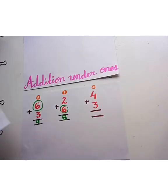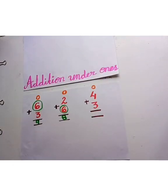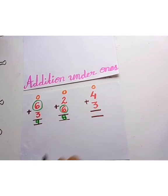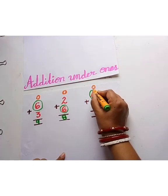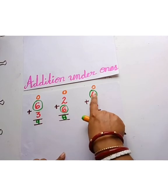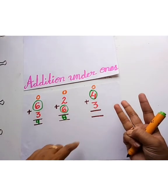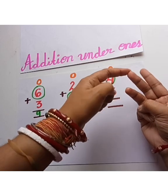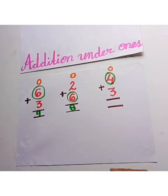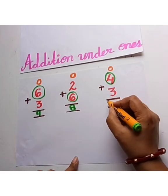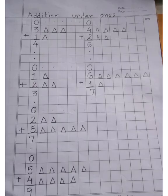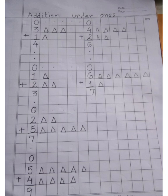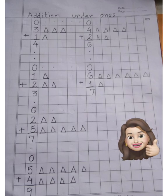Next. Now tell me children, which one is the biggest number? Yes, 4. Keep 4 in mind, and then 3: 5, 6, 7. So the answer will be 7. Children, do these addition sums in your number work copy. Thank you children. See you next time.